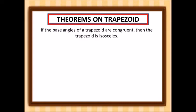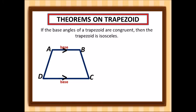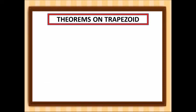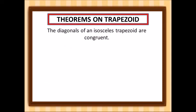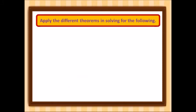Another theorem: if the base angles of a trapezoid are congruent, then the trapezoid is isosceles. In our illustration, the base angles are angle C and angle D, so the trapezoid is isosceles only if the measure of angle D is congruent to the measure of angle C. Another theorem: the diagonals of an isosceles trapezoid are congruent — diagonal AC is congruent to diagonal BD.